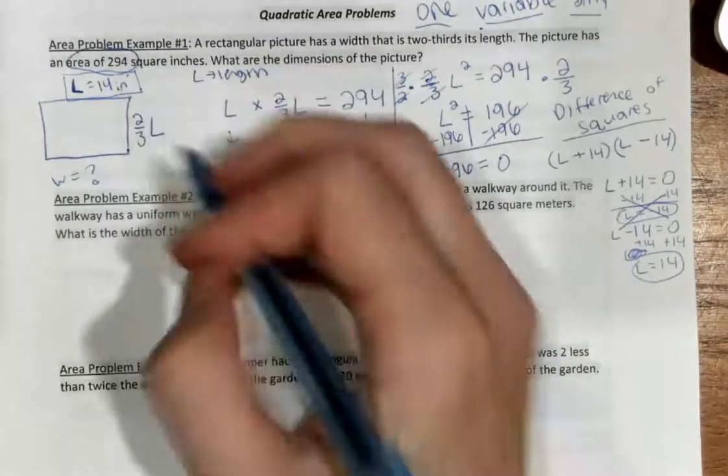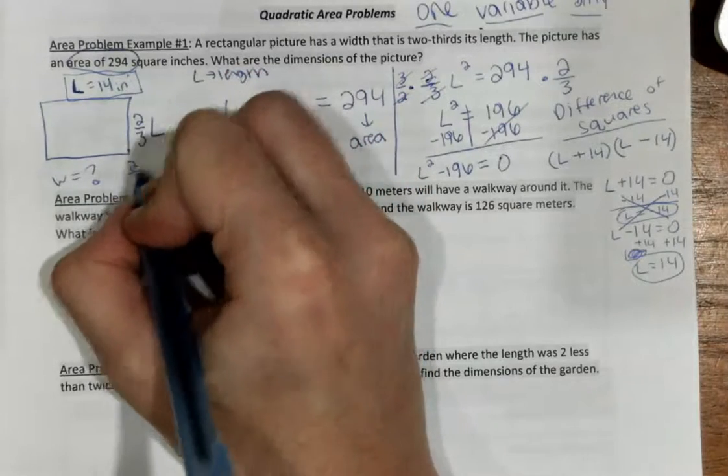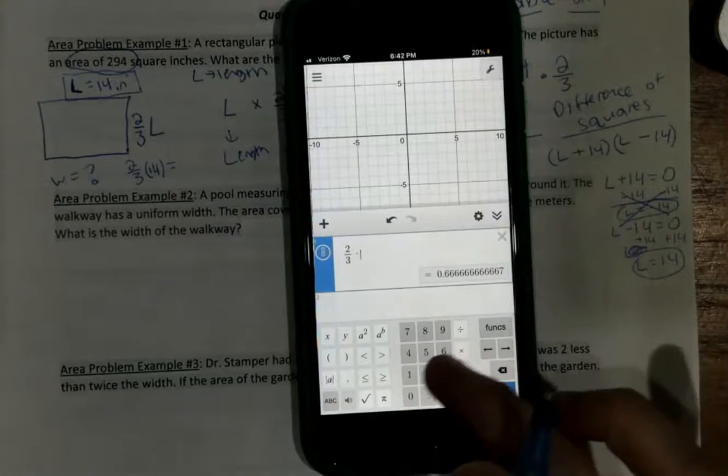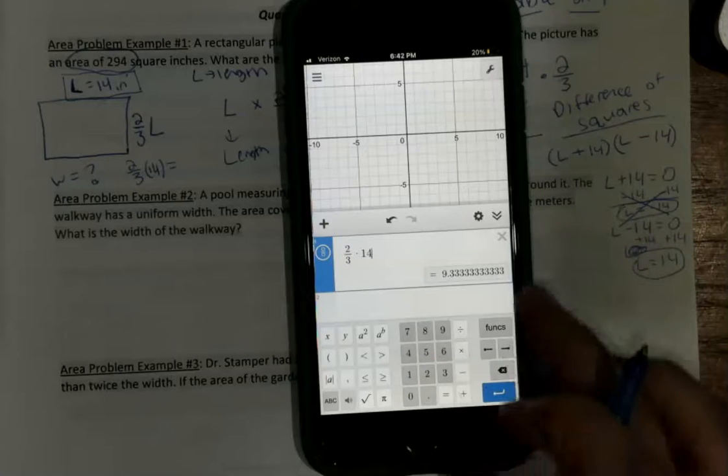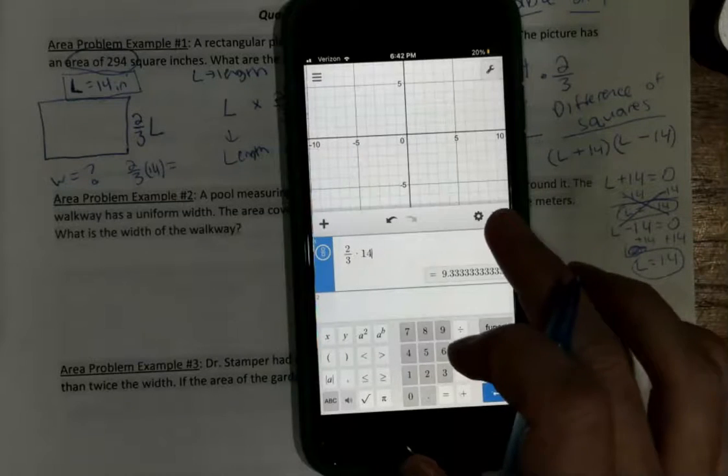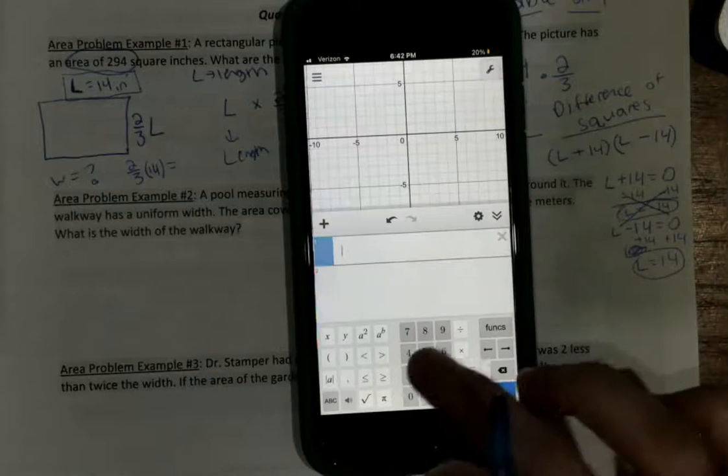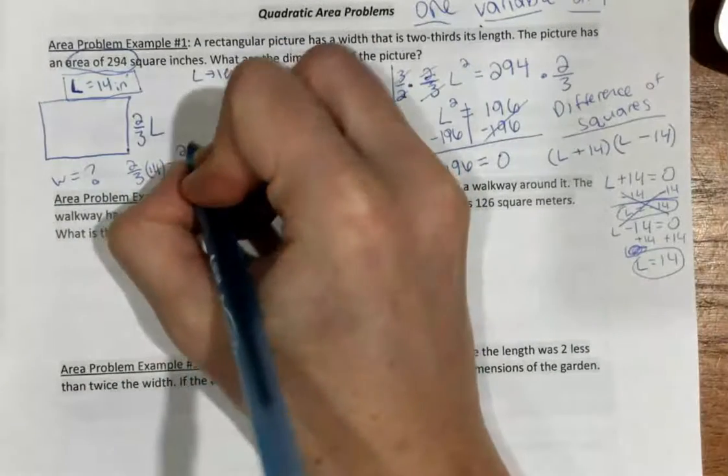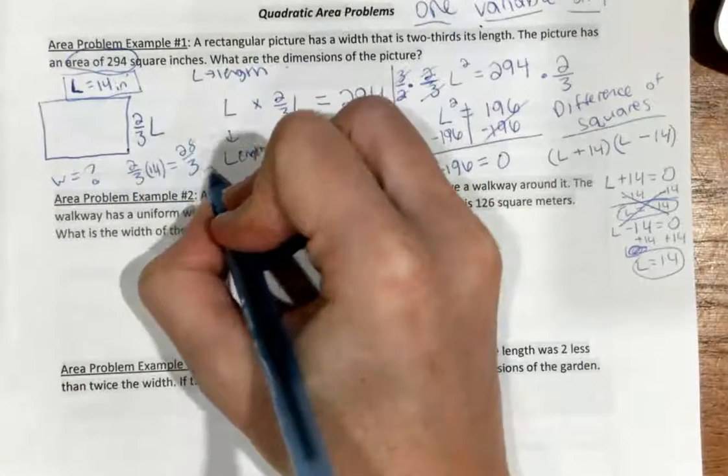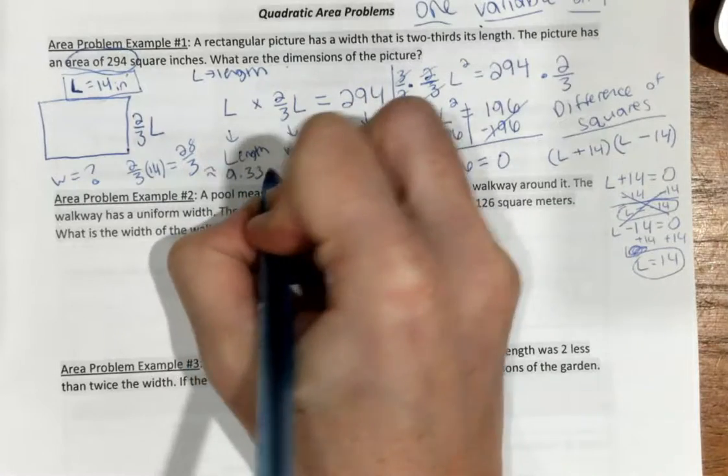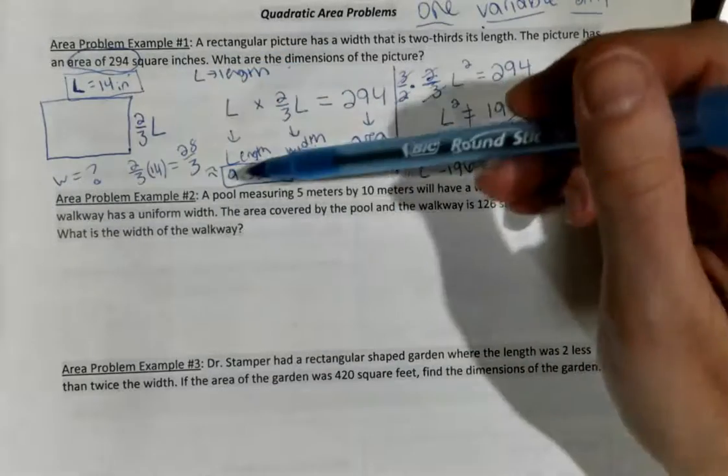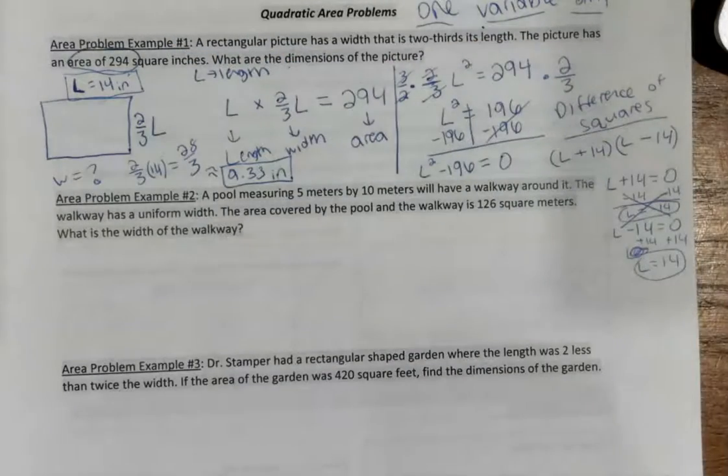My L is equal to 21 inches. What is my width equal to? I know that it's two-thirds of the length. So, I'm just going to plug 21 in for L. 2 over 3 times 21. 21 times 2, 42 over 3, which equals 14 inches. So, that's my answer right there. My dimensions. 21 by 14 inches. Those are the dimensions of my picture frame.